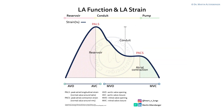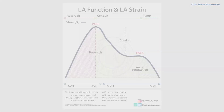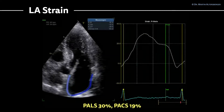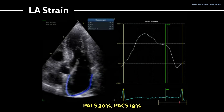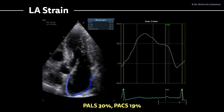As discussed previously, we can use left atrial strain and left atrial function. We look at two measurements: the PALS — peak atrial longitudinal strain — and the PACS — peak atrial contraction strain. Applying those measurements, the PALS at the tip of the curve is approximately 30%, which is reduced but points towards normal filling pressures. The PACS is 19%, which also points towards normal filling pressures.